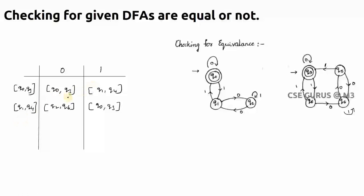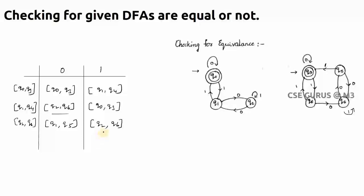Now proceed to the new pair (q2, q6). q2 on 0 gives q1, q6 on 0 gives q5, so new pair (q1, q5). q1 is non-final and q5 is also non-final — no problem. For q2 on 1 it is a self-loop giving q2, and q6 on 1 is a self-loop giving q6, so pair (q2, q6) — both non-final, no problem. Remember: if anywhere in the middle you find one is final and one is non-final, stop and say both DFAs are not equal.